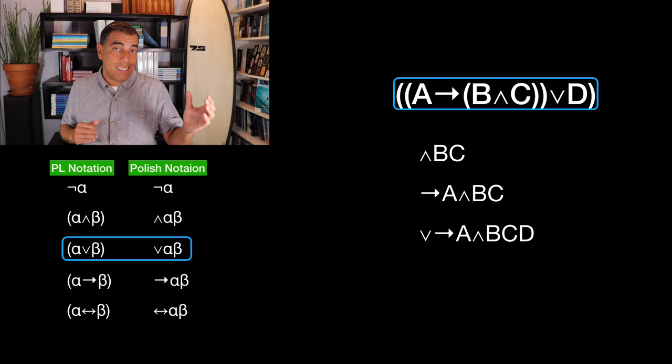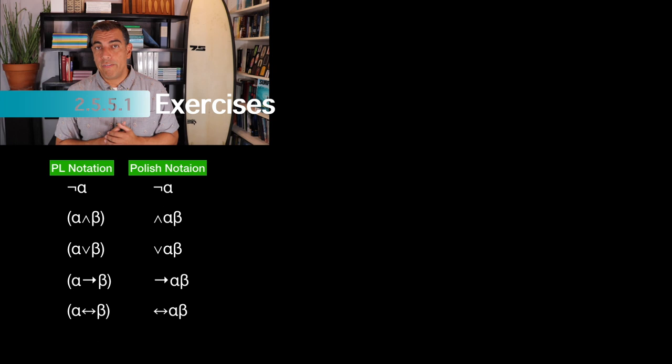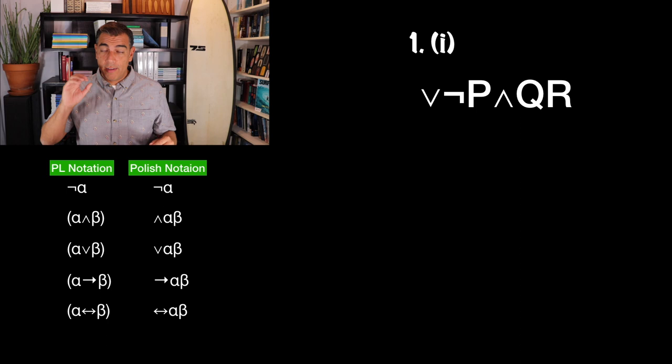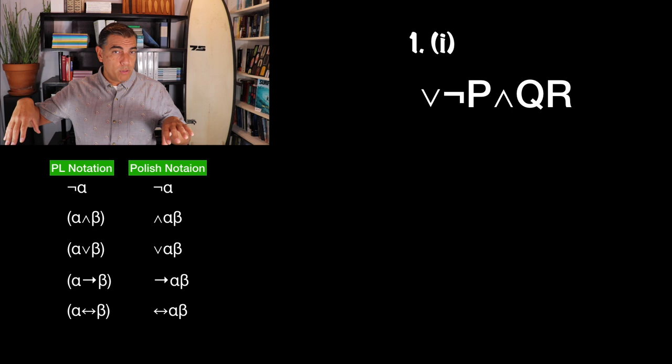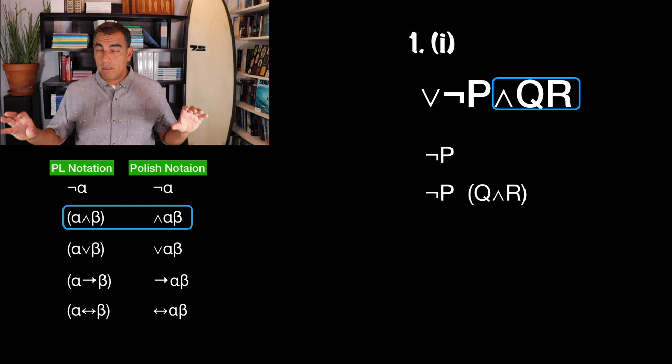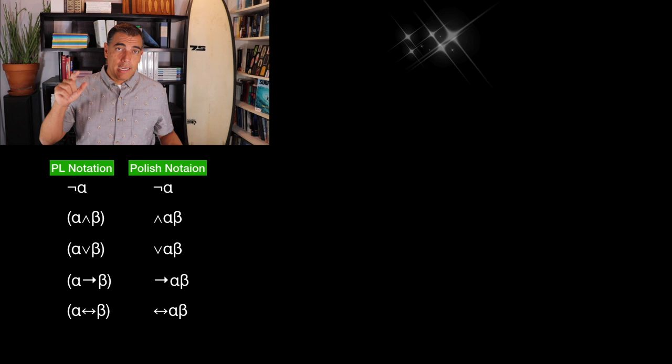That's Polish notation, but really if you want to get this, you have to practice it. So let's do exercises 2.5.5.1. Problem one says to take what we have in Polish notation and translate it into the notation we've been using in this book. Looking at the first one: I've got not P, I've got and Q R, and I have a disjunction symbol at the front. I think what we've got here is just one big disjunction.